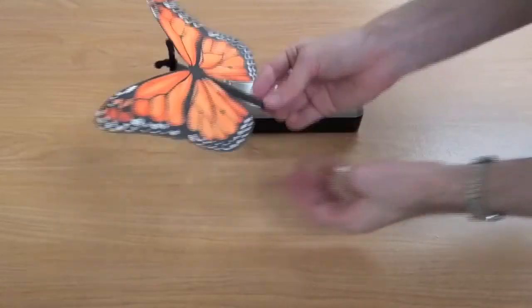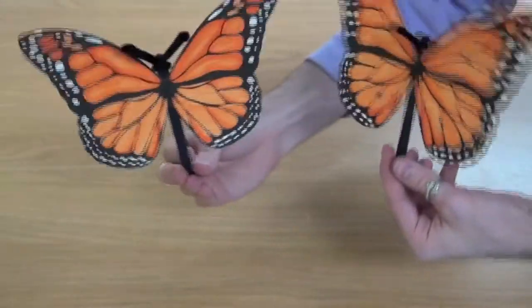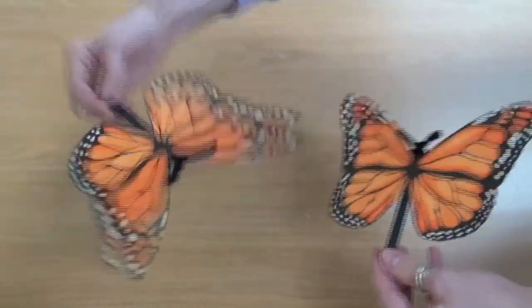And there you have it. Here we have two monarch butterfly puppets. It's really great—we have both a male and a female.